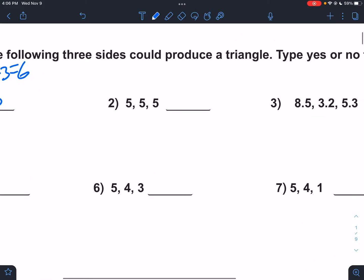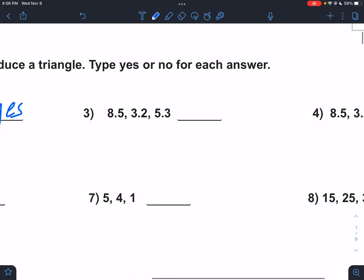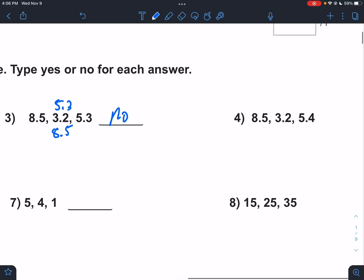5, 5, 5 all the same number, yes. 3.2 and 5.3, if I add those together I would get 8.5. That equals, not enough.